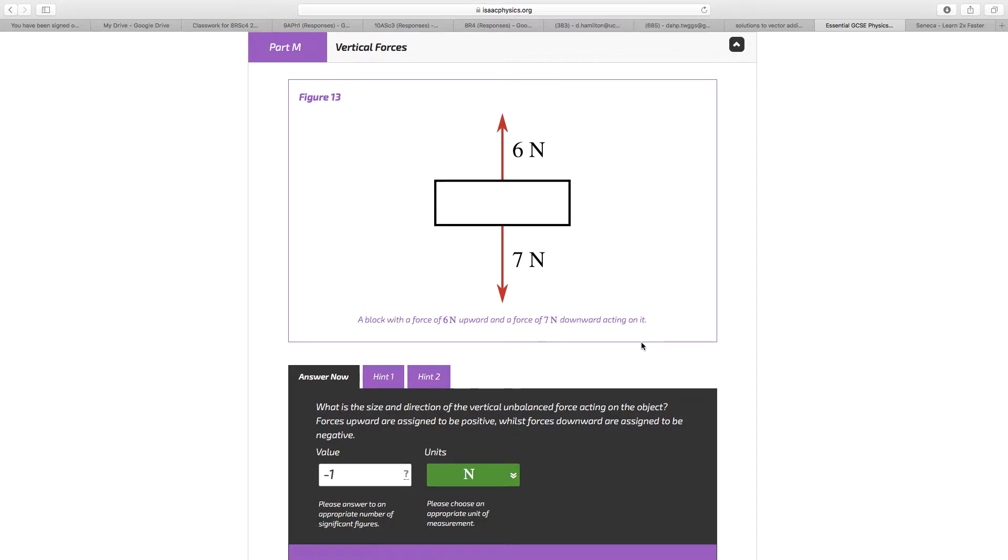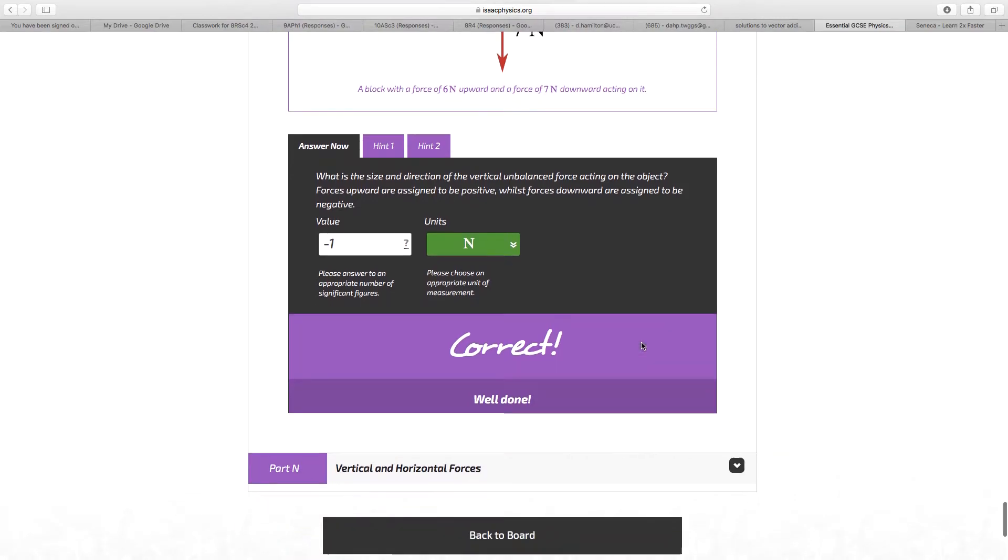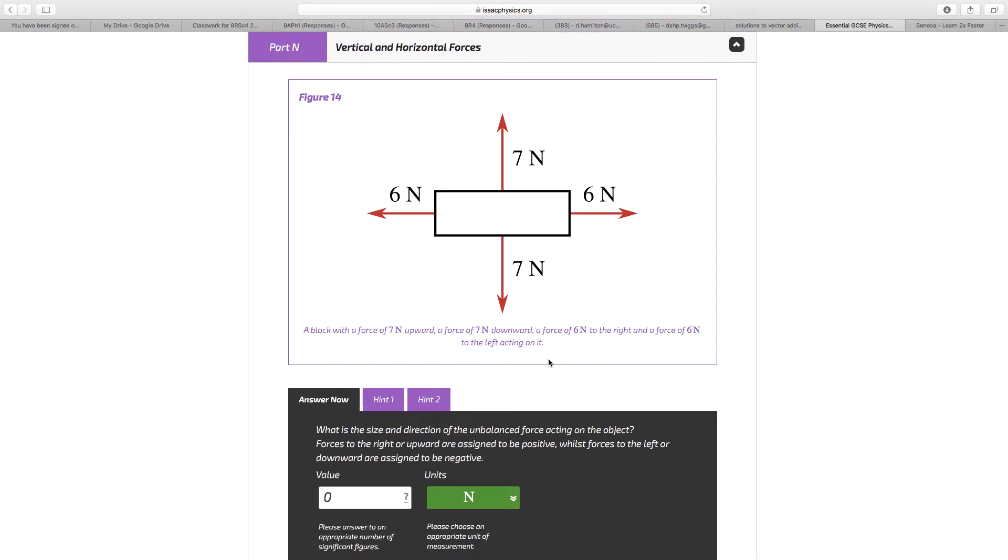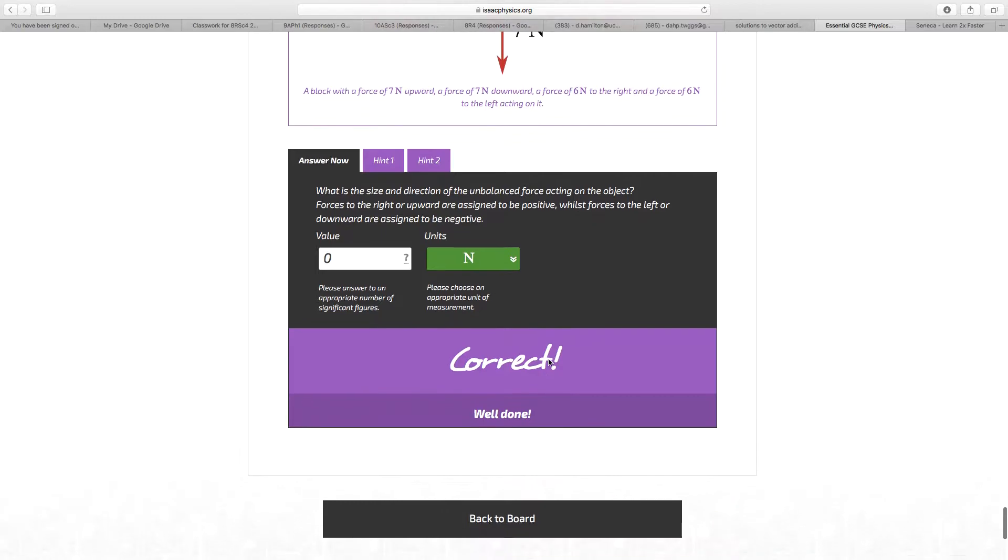We have 6 up and 7 down, giving you 1 down overall, minus 1 Newton. And finally then, 7 up, 7 down gives you 0 vertically. 6 left, 6 right gives you 0 horizontally, 0 Newtons.